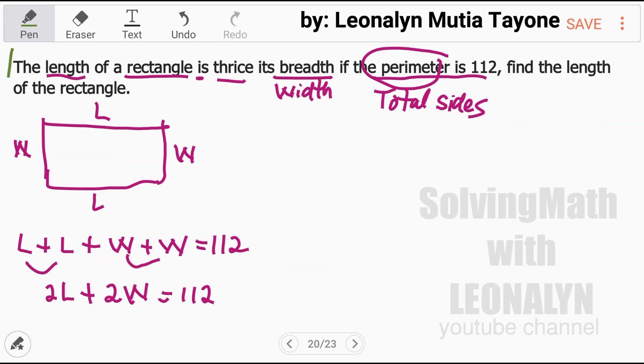Next, the length of a rectangle is thrice its breadth or width. Length, is equals. Thrice means three times the width. Therefore, L is equal to 3W.